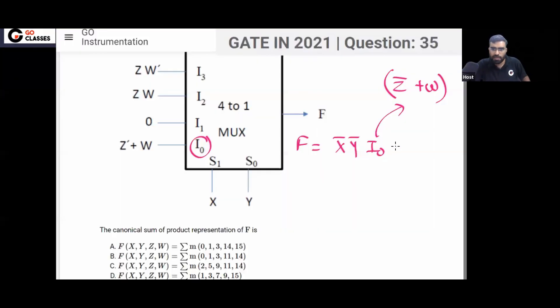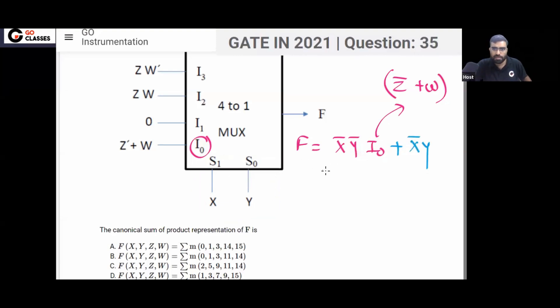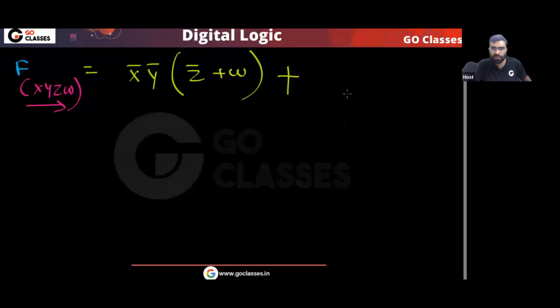When the select input is X̄Y — that is, 0 and 1 — the output will be I1. I1 is zero, so this entire term contributes nothing; it becomes zero.